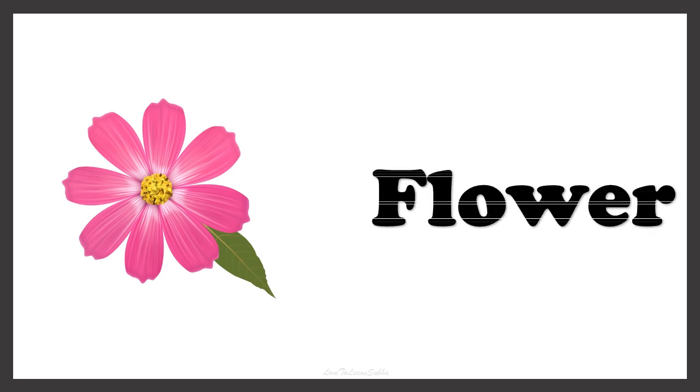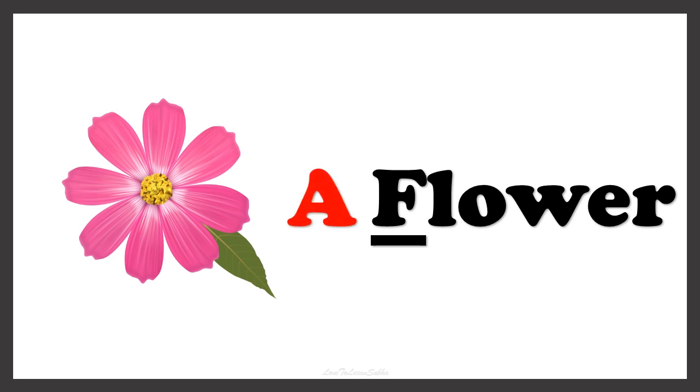Now can you guess the name of this picture? Yes, FLOWER. So what article comes in front of the word FLOWER? Let's check out the first letter of this word. FLOWER starts with the letter F. Now F is a consonant. So we use the article A. This is A FLOWER.